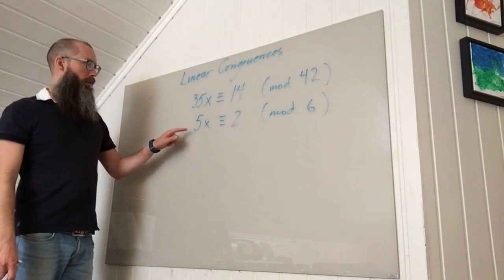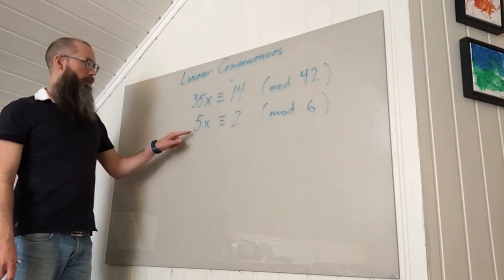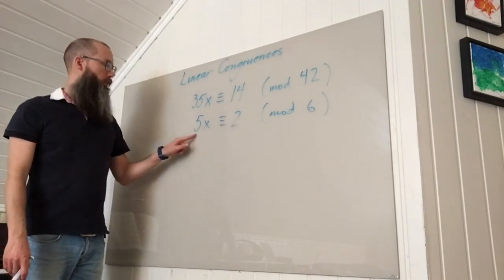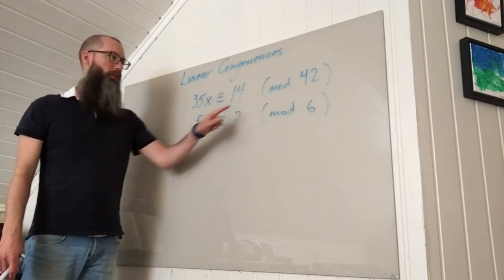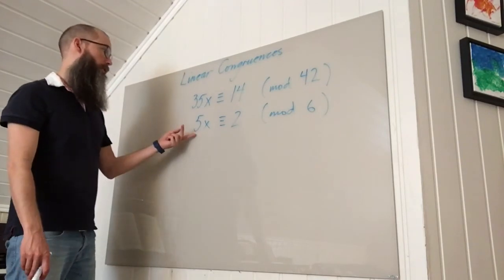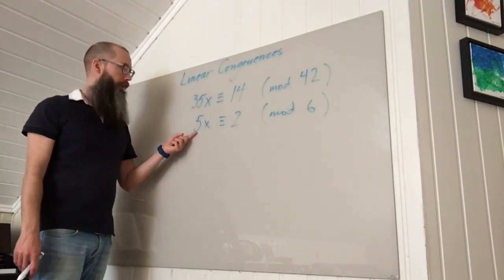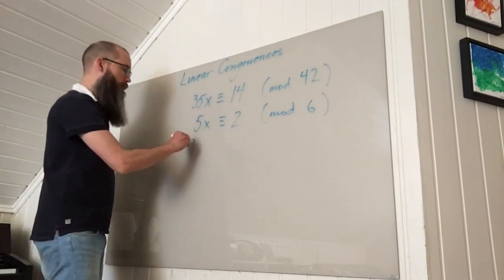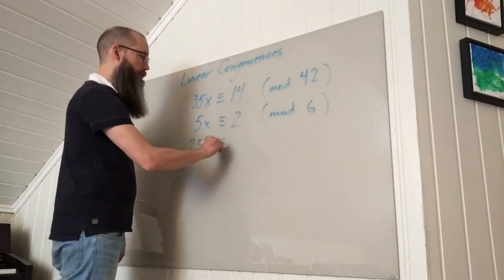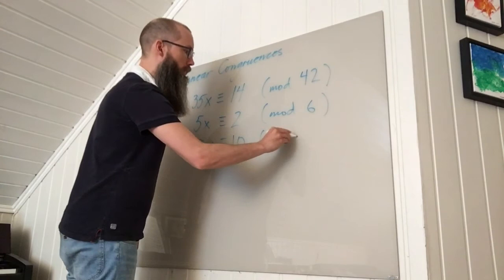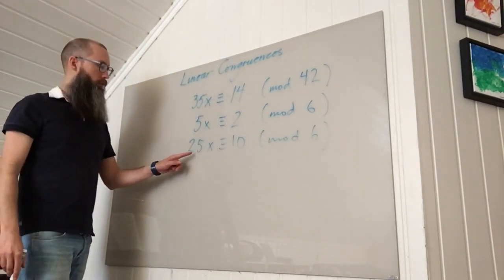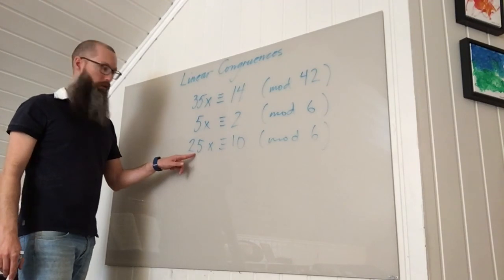Now I can try to multiply these numbers by an integer so that the coefficient is congruent to 1 mod 6, because then I can simply replace the coefficient by 1 and that solves the congruence. So if I multiply by 5, I get 25x is congruent to 10 mod 6, and 25 is congruent to 1—it's 1 more than 24, which is a multiple of 6.